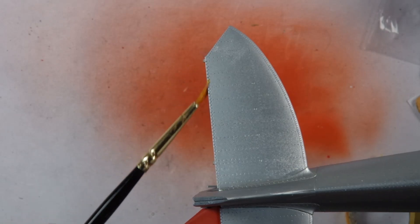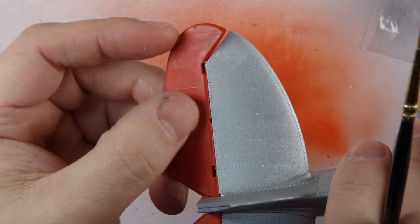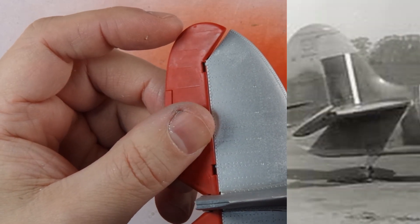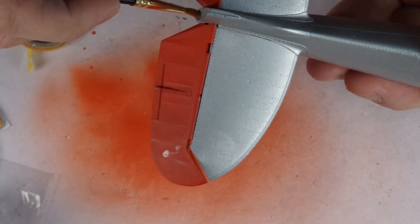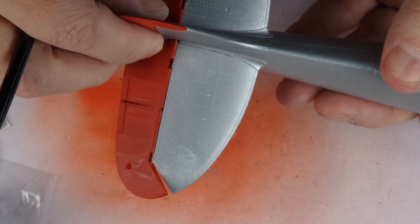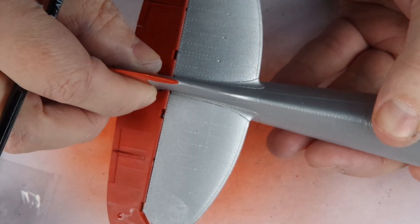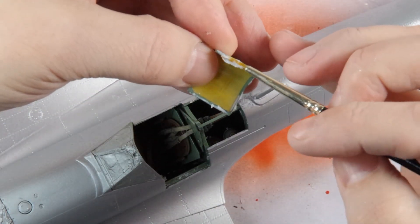The last steps were to attach the rear horizontal stabilizer control surfaces, which went on at a pronounced angle as seen in wartime photographs. The rudder then followed suit. I then glued the front and rear transparencies in place with PVA glue.